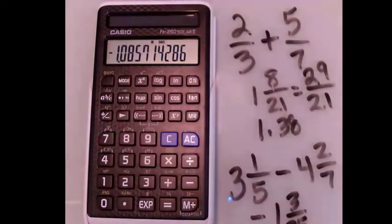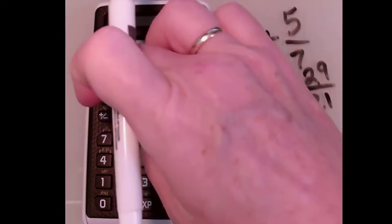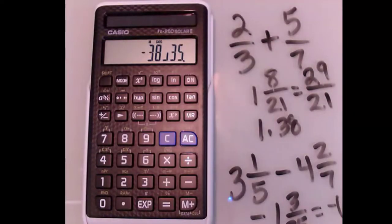If I hit that button again, I see the decimal version: negative 1.09 if we round. If I hit shift and that button, I see the improper fraction: negative 38/35. So nice applications of all those functions.